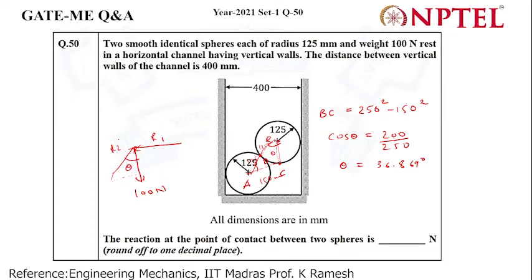So what do we have to calculate? We have to calculate R2. We can write R2 equals 100 divided by cos theta,